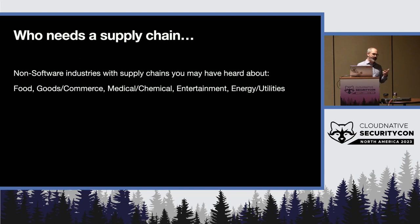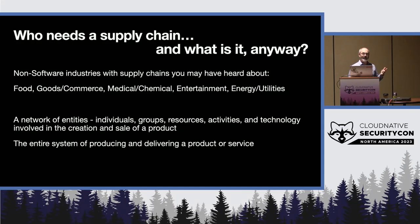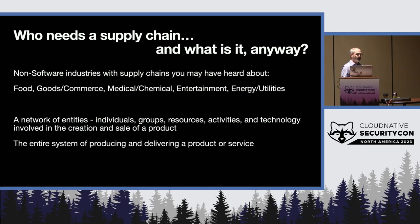So what is a supply chain? You've probably heard about supply chains in other industries like food, goods, commerce, medical, chemical, entertainment, energy, and utilities. They all share common concepts. The overall definition is: a network of entities, individuals, groups, resources, and technology involved in the creation and sale of a product — or the entire system of producing and delivering a product or service. In the past few years we've seen a lot of growth in software complexity and open source software, and a lot of threats emerge in many parts of the supply chain.